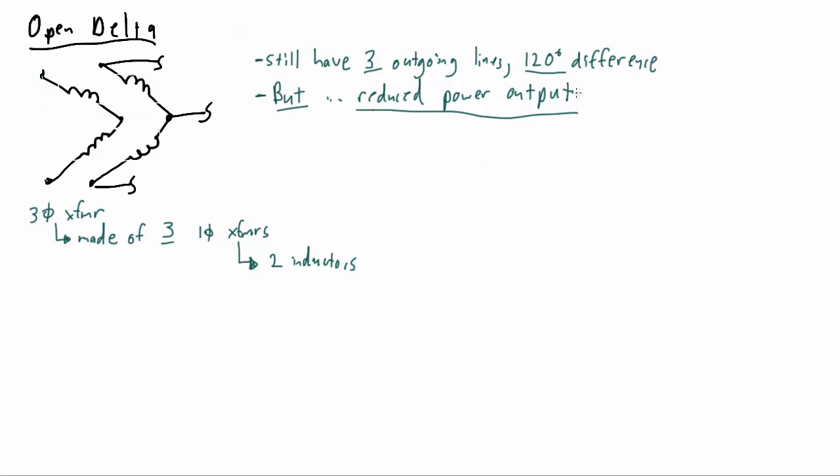We had said that this open delta configuration yields a reduced power output and this is a very vital element to understanding the open delta. In fact if you're going to see open delta questions on the PE, most likely the PE question will have something to do with the nature of how much power has been reduced. So when we hear about the reduced power output most of us hear two percentages that are given. One is 58% and one is 87%. And now we need to understand what those two percentages come from and their significance.